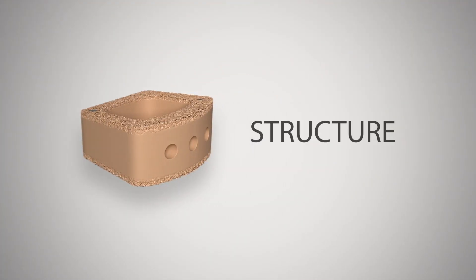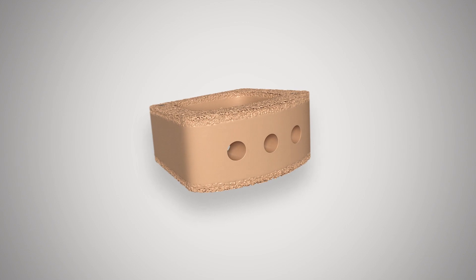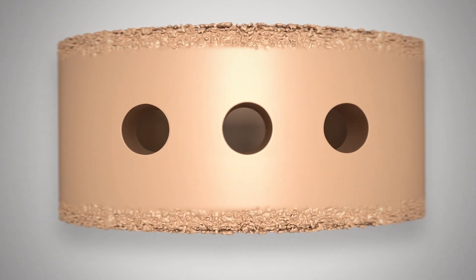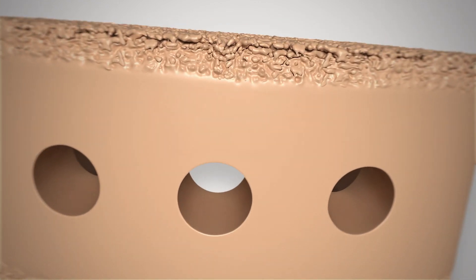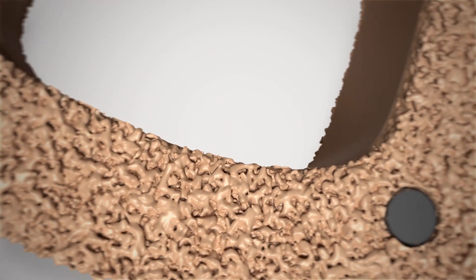Porous PEEK is manufactured through a proprietary extrusion process, which produces a unified porous-to-solid structure that mimics the cortical-to-cancellous transition of bone.